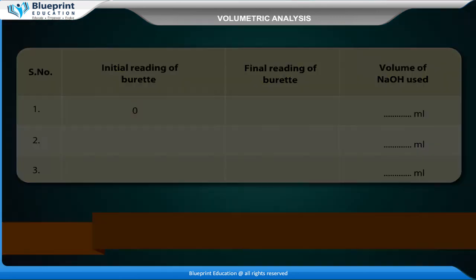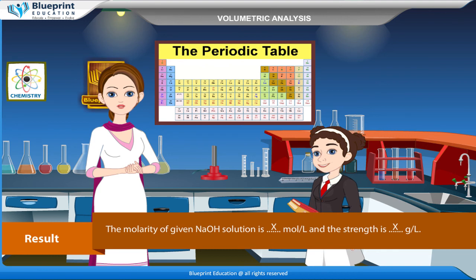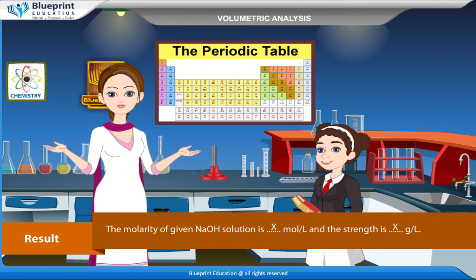Result: The molarity of given NaOH solution is X mole per litre and the strength is X gram per litre.